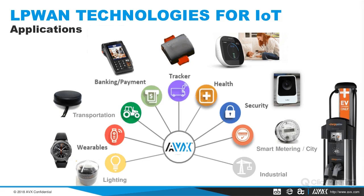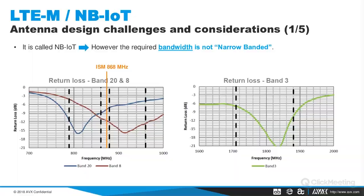One key consideration is the misleading name 'narrowband IoT.' Many customers say it's narrowband and assume they need a narrowband antenna — but this is only narrowband in terms of channel operation. With ISM 868 MHz, a narrowband antenna works because you only use a narrow frequency range. However, in NB-IoT, you can use bands like 20, 8, and 3, and you will need a much wider bandwidth antenna.